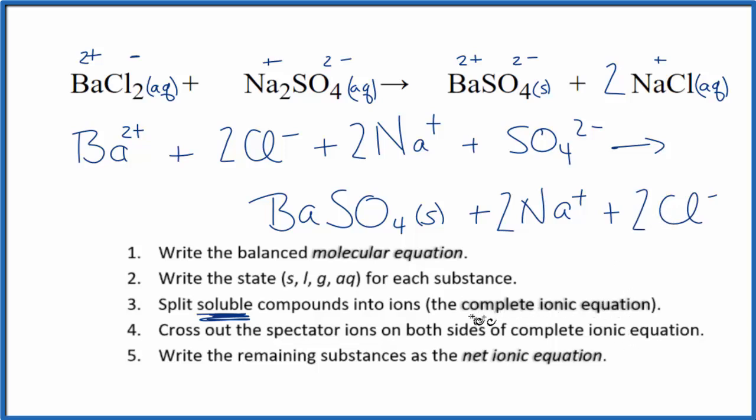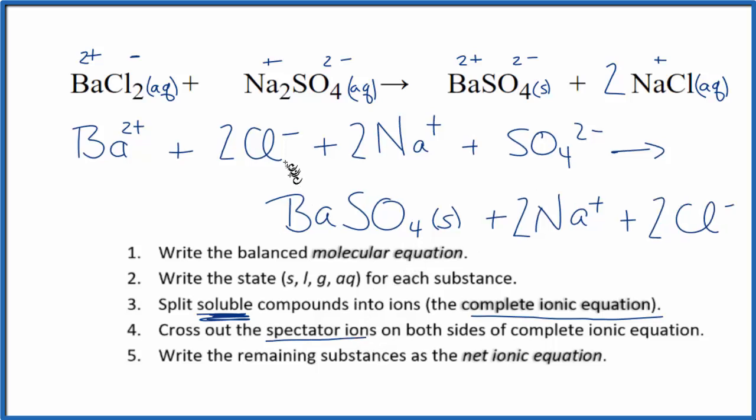This is our complete ionic equation. And now we can cross out the spectator ions that appear on both sides. The spectator ions don't change in the chemical reaction. We start out with two Cl minus, two chloride ions. We end up with two chloride ions. So we're not really interested in those. They didn't change. So we're going to get rid of those. They're still dissolved in the solution.